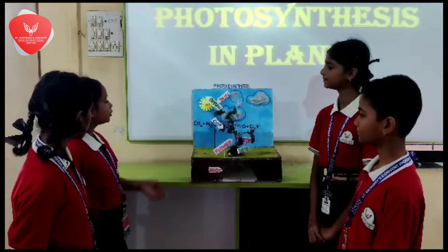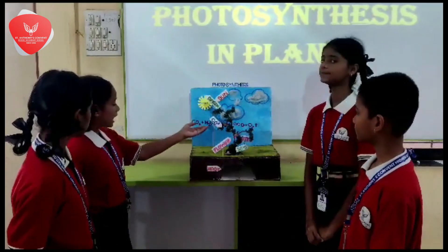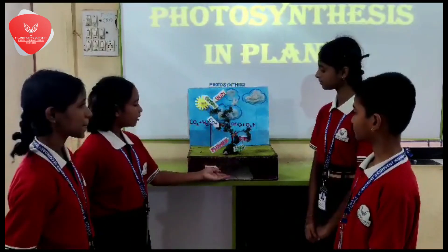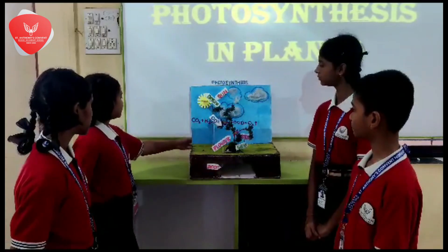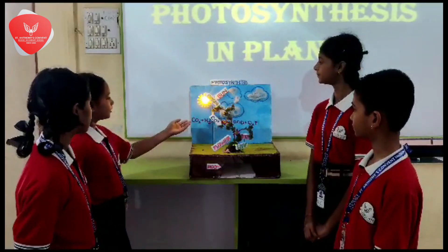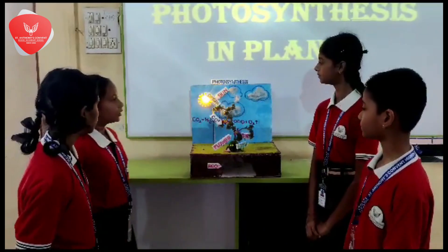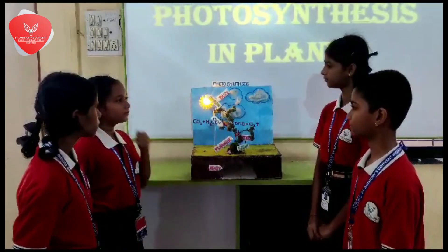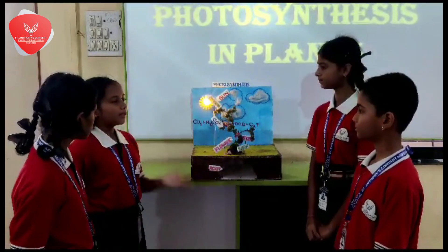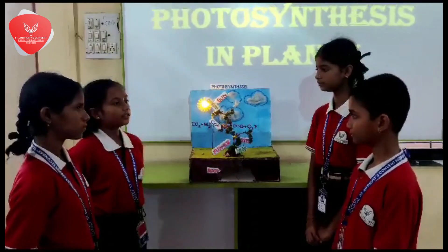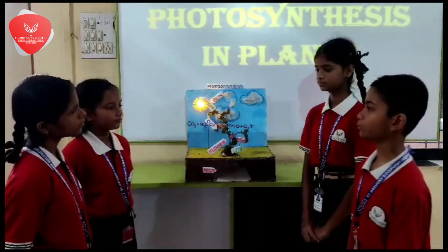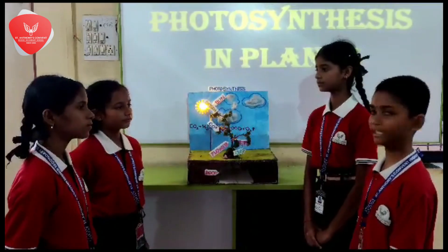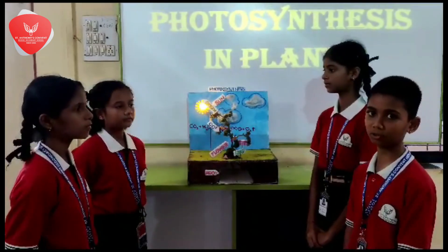Plants put together carbon dioxide from the air and water from the roots in the presence of sunlight. They form their own food in the form of sugar. They use sugar as their food.